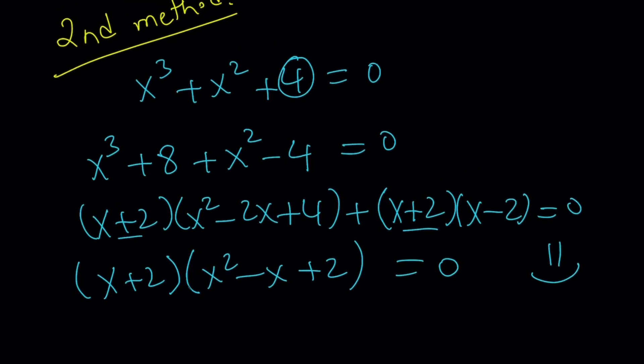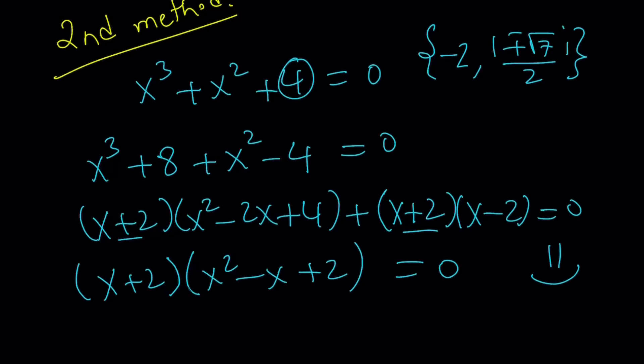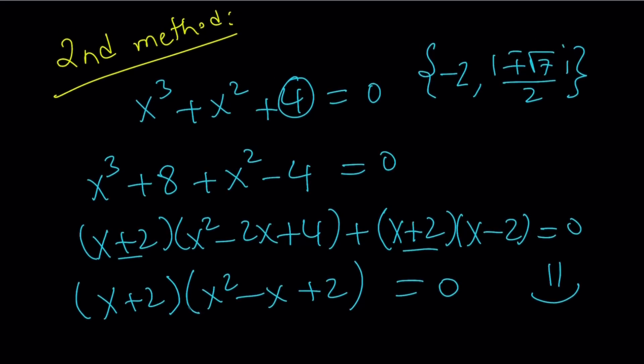And this brings us to the end of this video. Let me rewrite the roots. The roots are going to be negative 2 and 1 plus minus square root of 7i over 2. These are all the roots of the cubic. And this brings us to the end of this video. Thank you for watching. I hope you enjoyed it. Please let me know. Don't forget to comment, like, and subscribe. I'll see you tomorrow with another video. Until then, be safe. Take care. And bye-bye.